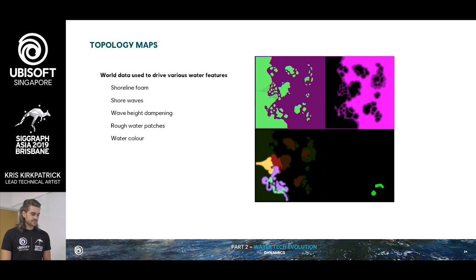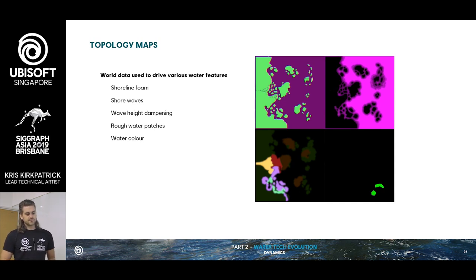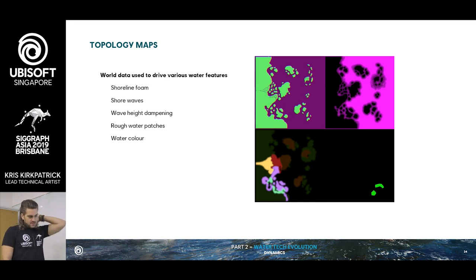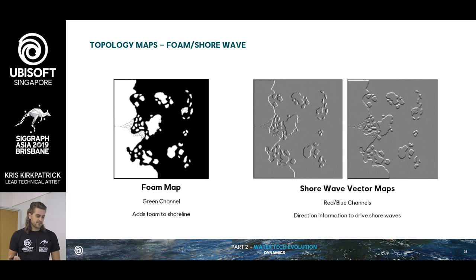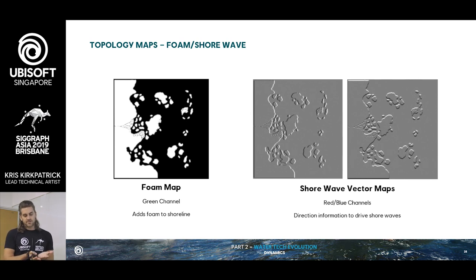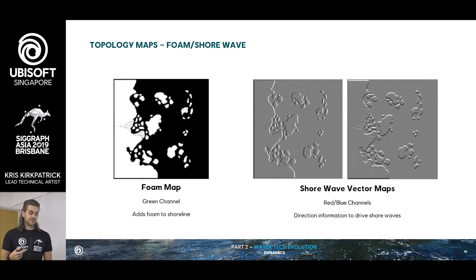So we'll talk about some of the static textures we use to drive or control world-driven data for the ocean: shoreline, shore waves, wave-height dampening, some rough water patches, and the actual water colors. The foam map is pretty straightforward — it basically checks where there's land, where the water meets the land, and adds a foam line around it. We also store the vector information for the procedurally generated shore waves.